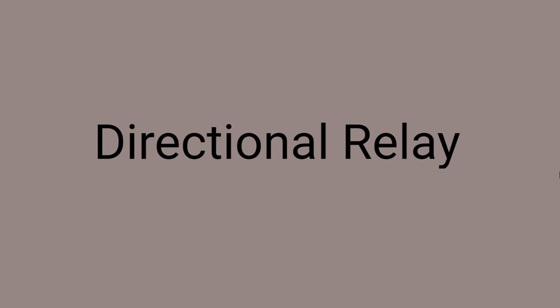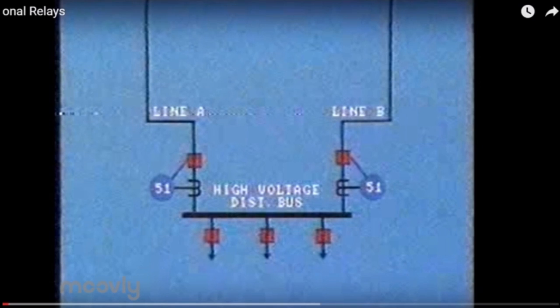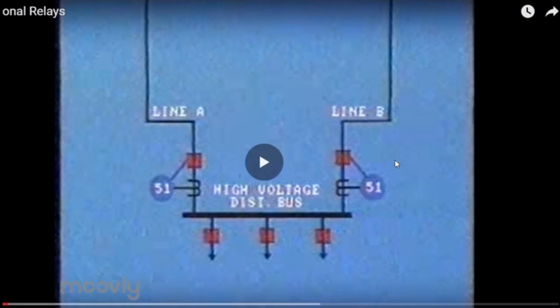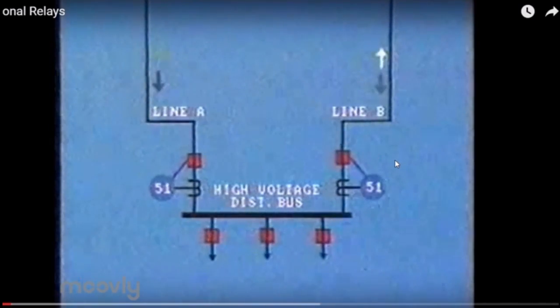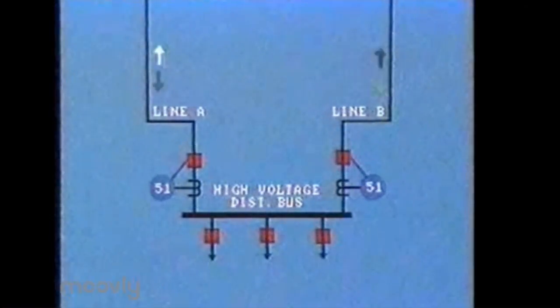Directional relay. Let us see how directional relays work. Consider two lines, A and B, which carry power into the bus and outside the bus.